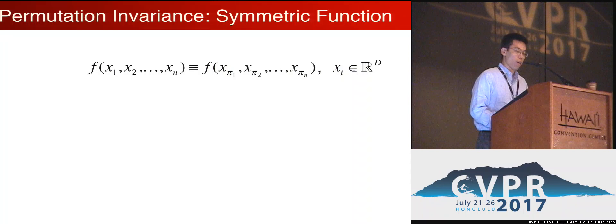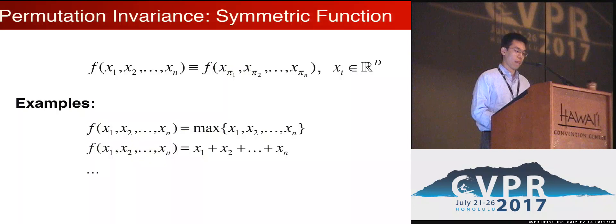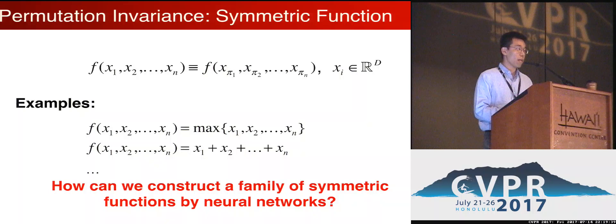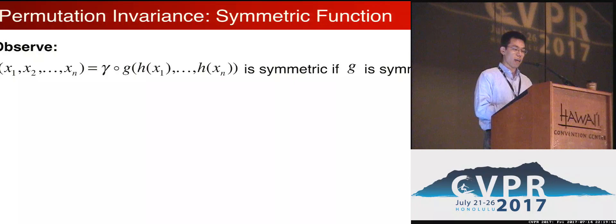Mathematically, a neural network is just a function. In a functional view, a permutation-invariant neural network corresponds to a symmetric function. In a symmetric function, for any ordering of the arguments, the function value is always the same. Many functions are symmetric — for example, max operation is symmetric, and so is summation. Then the question becomes: how can we construct a family of symmetric functions by neural networks?